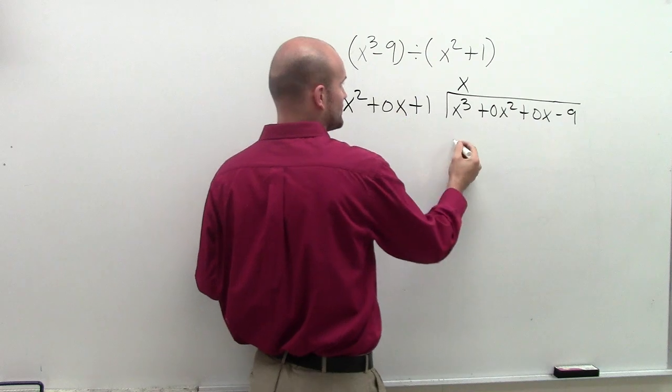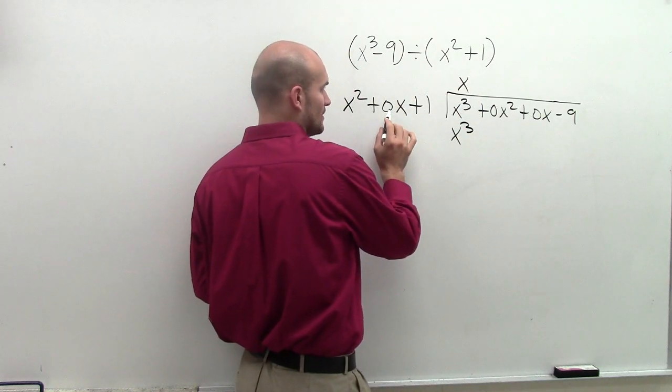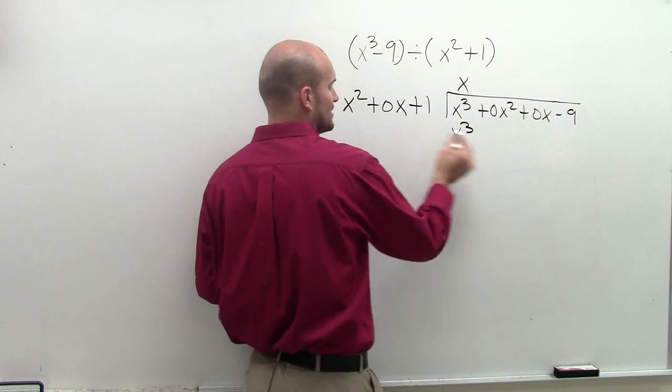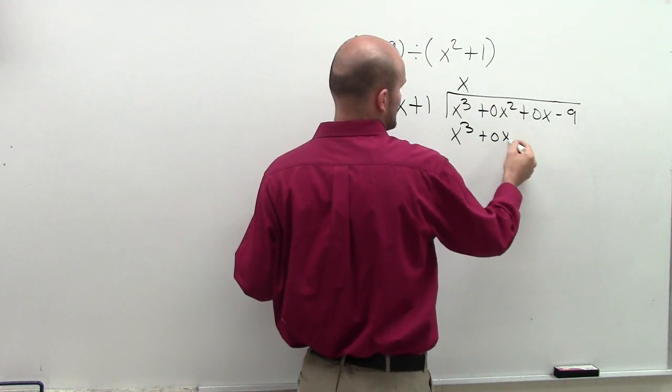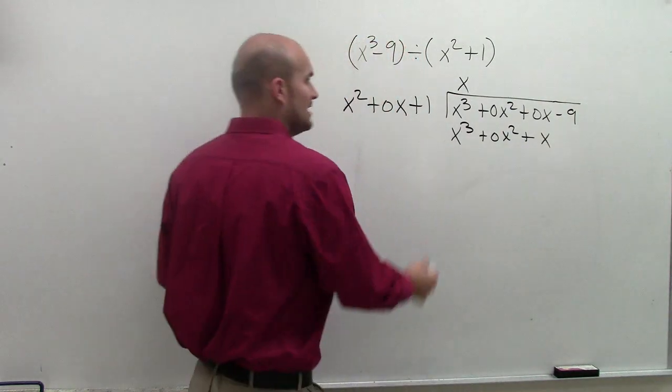Then x times 0x is going to be, again, 0x squared. x times 1 is just going to give us x. Now, again, we subtract the whole first term.